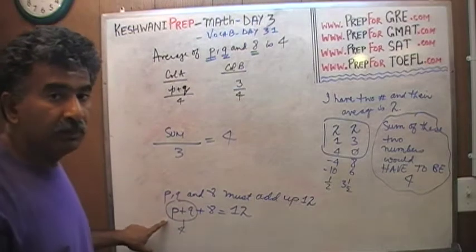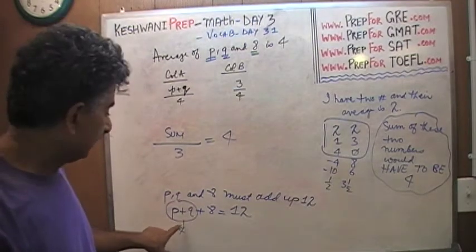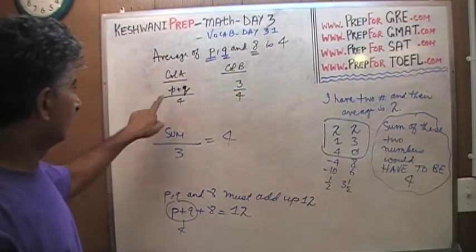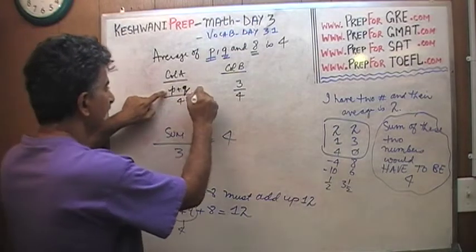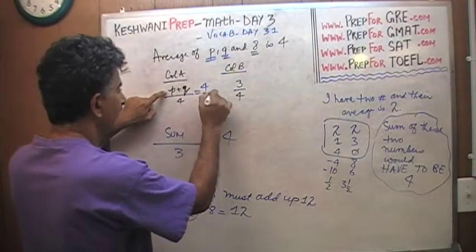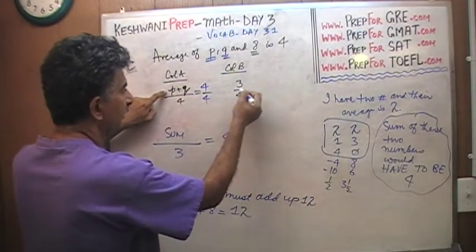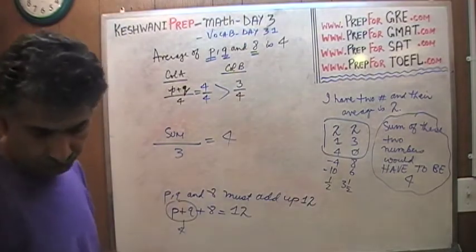We do not know what P and Q are individually, but whatever they are, they must add up to four. So that's what that is here. P plus Q must add up to four. Four divided by four is one. Here we have three quarters. One is more than three quarters. That's it.